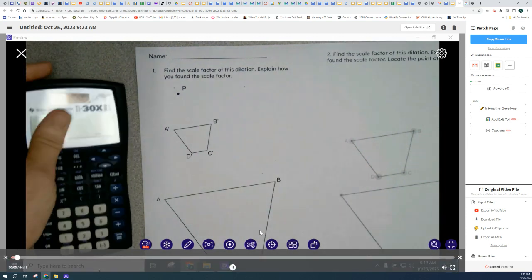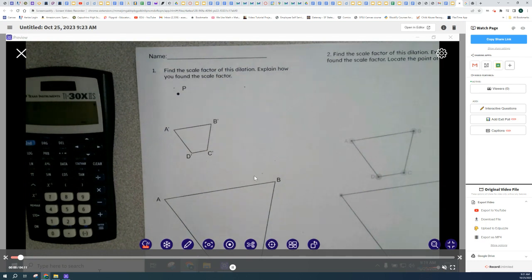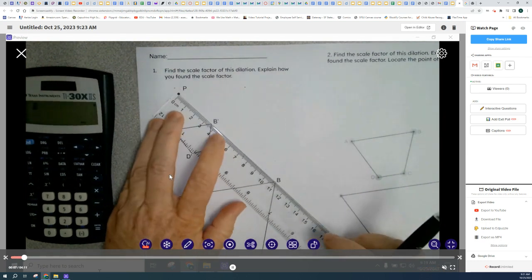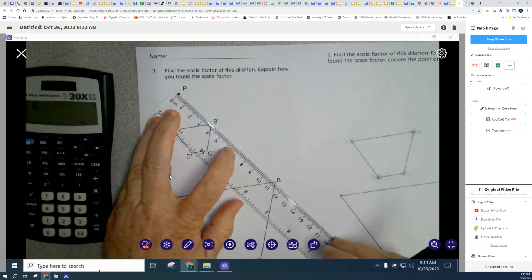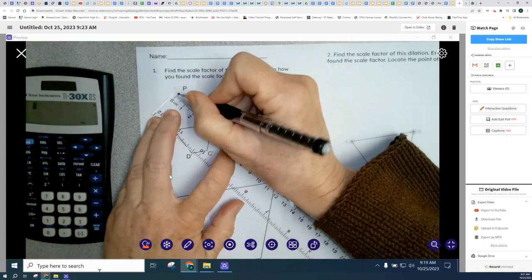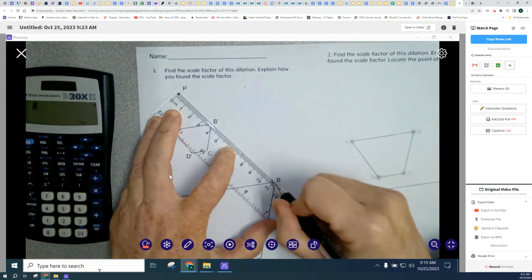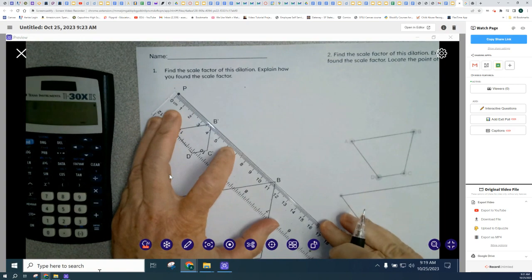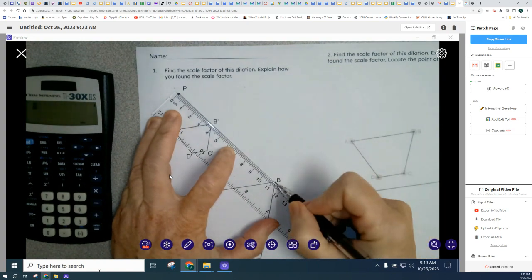So we have this worksheet here and I'm going to take my ruler and I'm trying to find the scale factor. So I'm going to go ahead and find the distance from P to B and from P to B prime. I'm going to find those two distances. So here it goes.